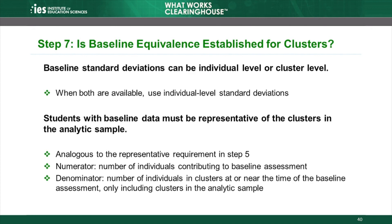The third difference is that students with baseline data must be representative of the clusters contributing to the impact analysis at the time of the baseline equivalence assessment. This requirement is analogous to the representativeness requirement for outcome data described in Step 5. Just as the individuals contributing outcome data must be representative of the clusters, so must the individuals contributing baseline data. The approach in Step 7 is identical to Step 5, except that the numerator is calculated using the number of individuals contributing to the assessment of baseline differences, and the denominator is the number of individuals in clusters at or near the time of the baseline assessment. The calculation only includes individuals from within the clusters included in the analytic sample.